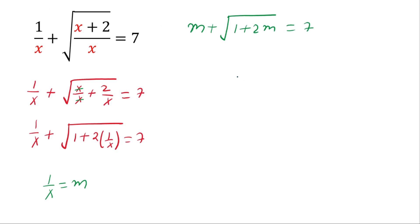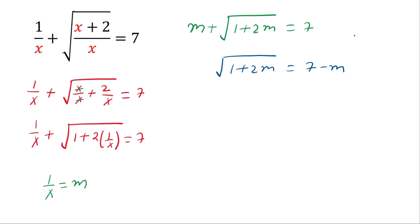If we subtract m from both sides, then square root of 1 plus 2 times m equals 7 minus m. Now look carefully — on the left hand side we have a square root, so the left hand side is positive. It means the right hand side should also be positive, so we can say m is less than or equal to 7.